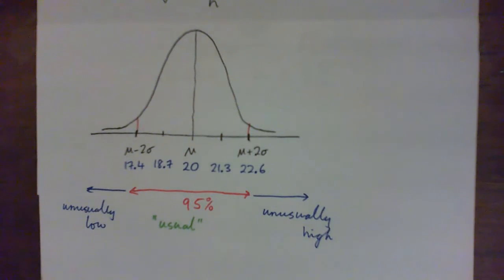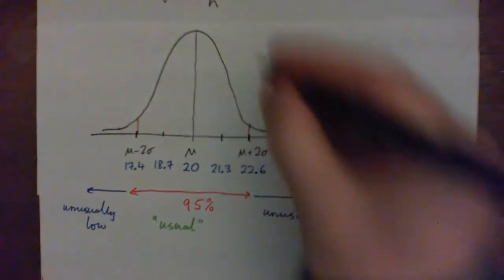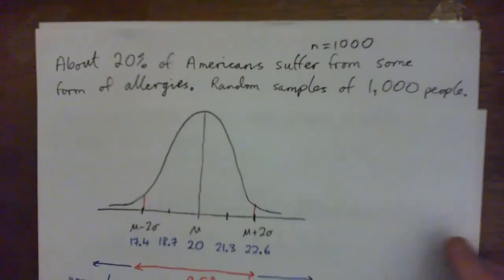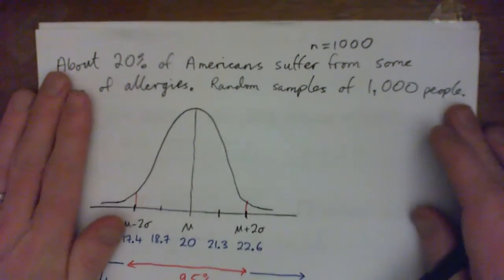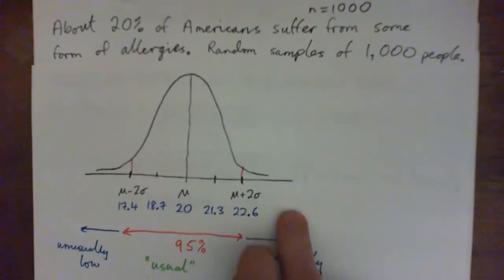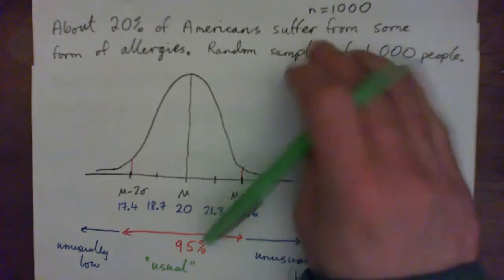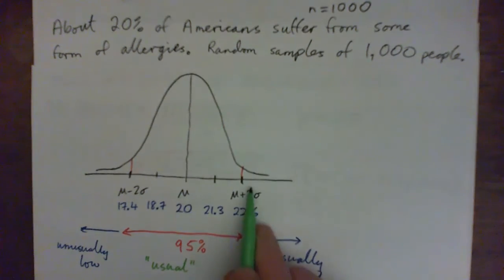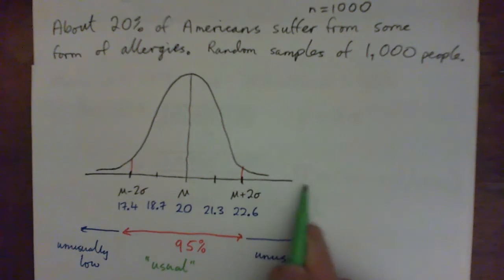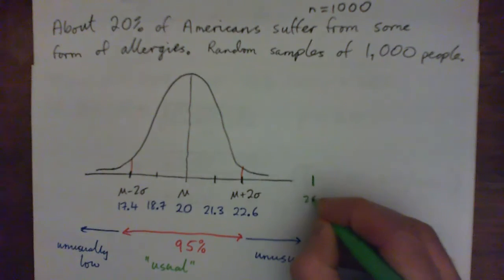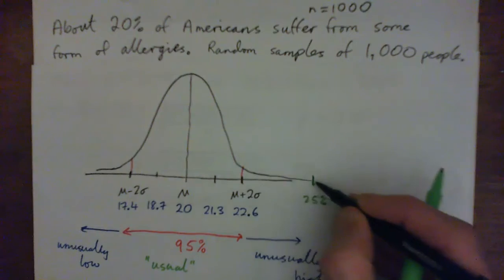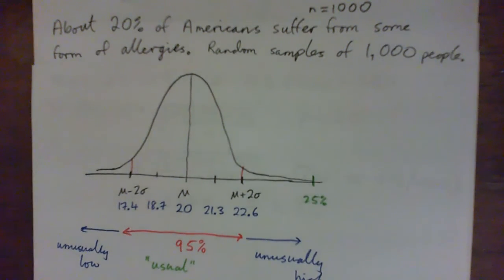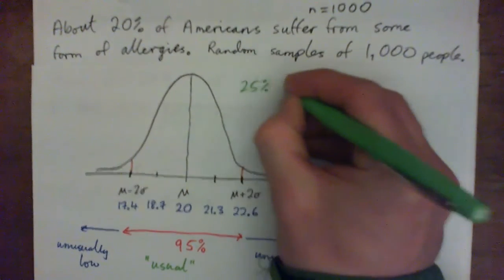Now let's answer the question they asked: how unusual would it be to find a random sample of a thousand people in which 25% suffered from allergies? Looking at the graph, 25% is way out to the right — beyond our usual range. So 25% would be unusually high.